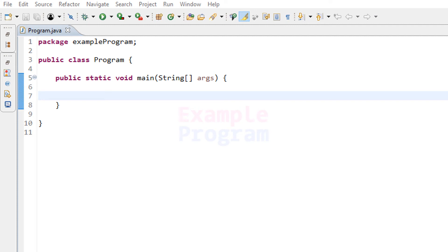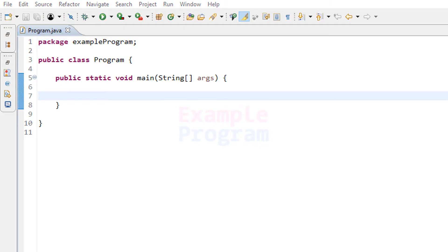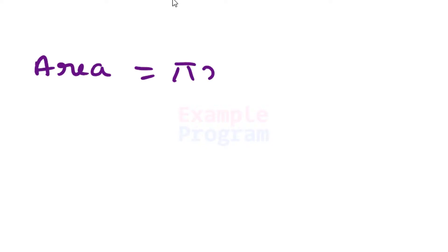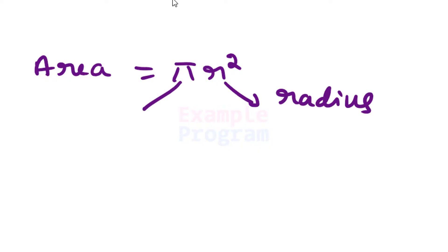Welcome to Example Program. In this video we will see how we can write a Java program to calculate the area of a circle by using the radius. We will ask the user to enter the radius and then calculate the area using the formula: area = π r², where pi is a Greek letter representing the constant approximately equal to 3.14159, which is the ratio of the circumference of any circle to its diameter.